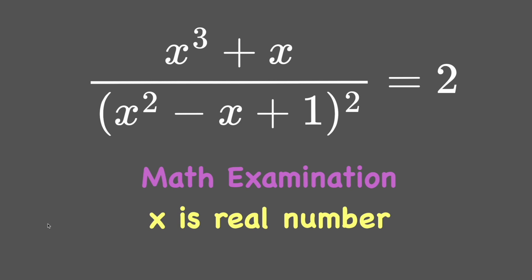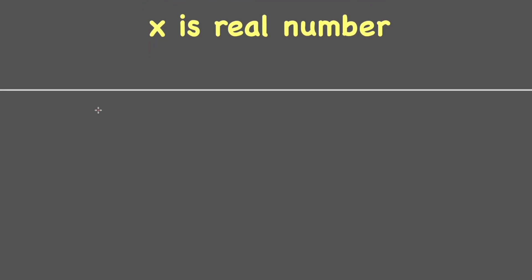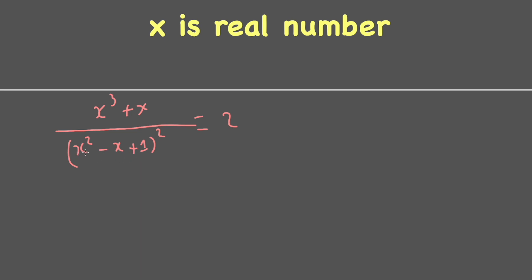Hi, welcome back. The problem today is a tricky rational equation. Let's get started. We rewrite the equation: we have x³ + x over (x² - x + 1)² equal to 2. We recognize that the denominator is always greater than 0.